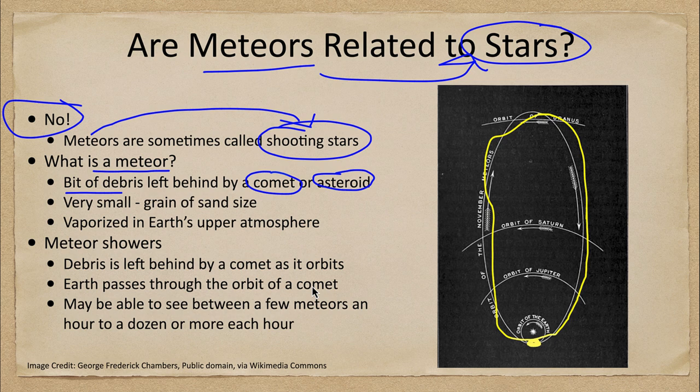So again, nothing to do with stars — everything to do with our own solar system and some of the smaller objects such as comets or asteroids. We don't see meteors from every comet or asteroid, only those whose orbits we happen to pass through. With orbits being three-dimensional, it's quite possible that there are many comets whose debris earth never passes through.